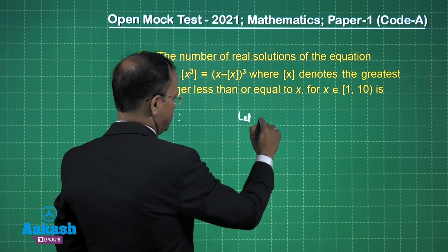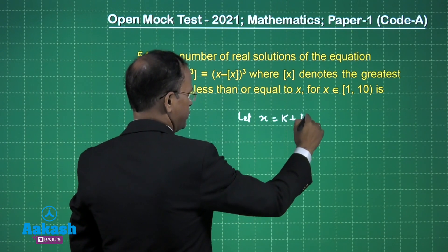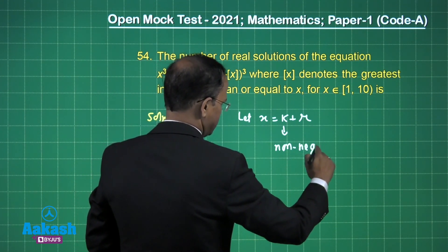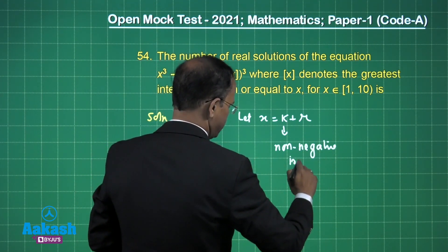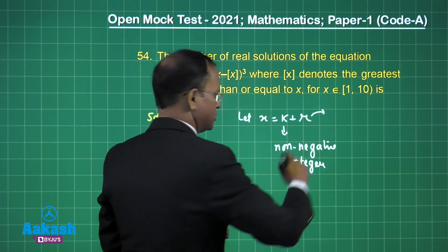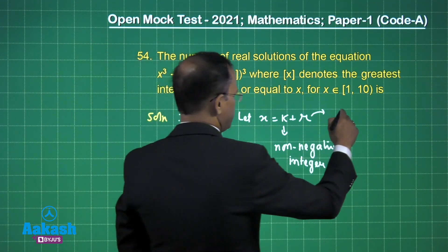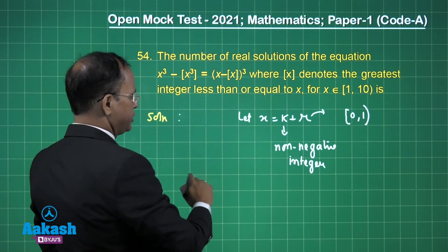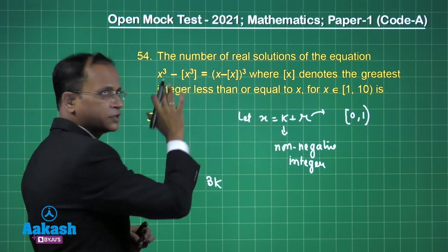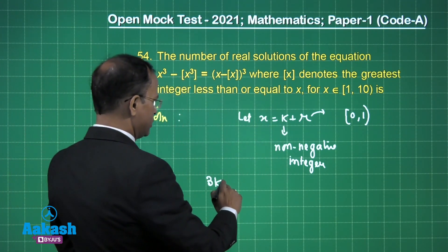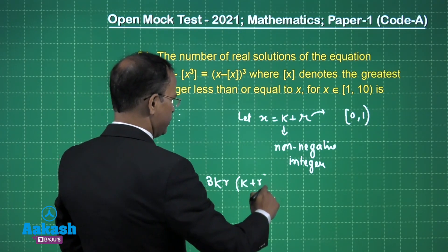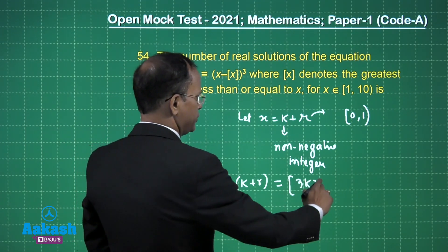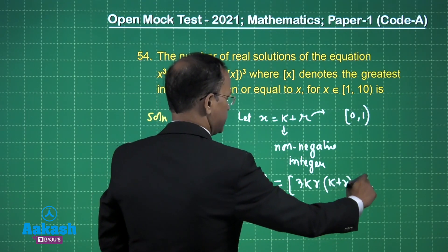We let x = k + r, where k is a non-negative integer (the integer part) and r is the fractional part lying in [0, 1). Substituting into the equation, we get 3k·r·(k + r), which rearranges to 3kr·(k + r) + r³. Since k + r = x is fixed, we work with integer values of k.